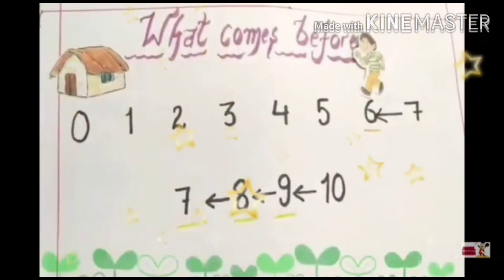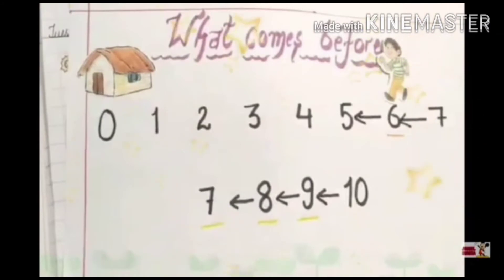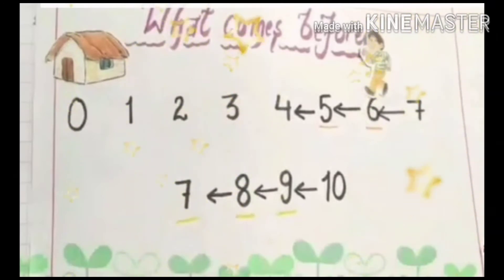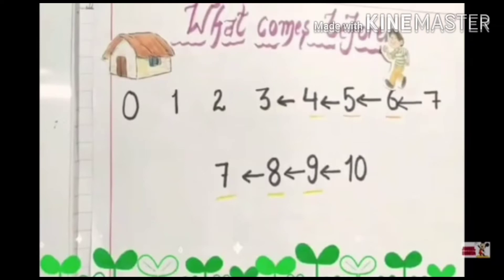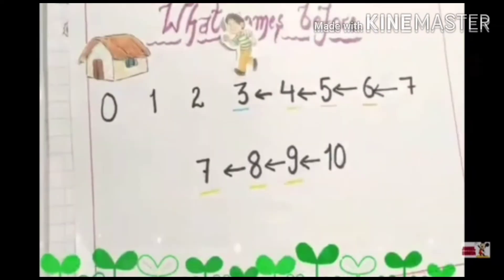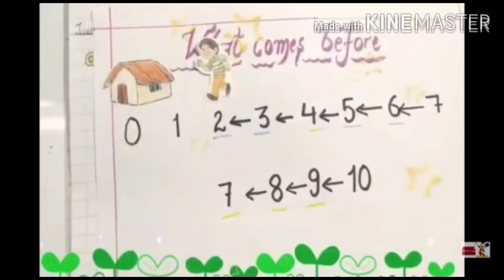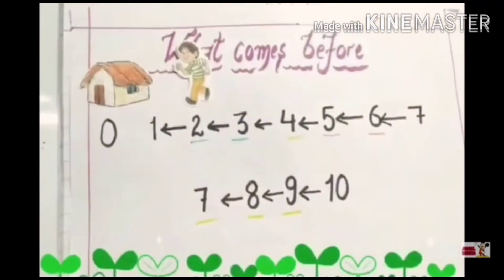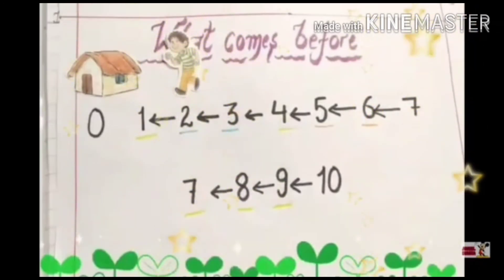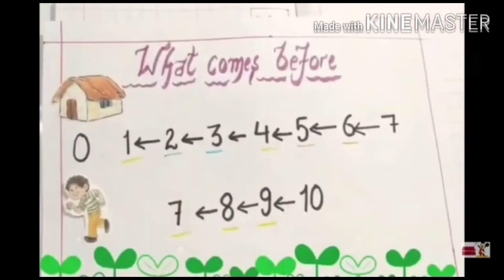Then what comes before 6? It's 5. Then what comes before 5? It's 4. Then what comes before 4? It's 3. What comes before 3? It's 2. Now Johnny is about to reach his home. What comes before 2? It's 1. And what comes before 1? Yes, it's 0. Finally, he reached.